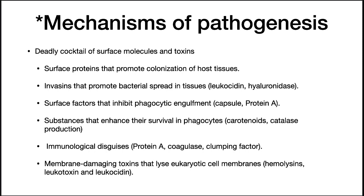Carotenoids and catalase will short-circuit killing mechanisms in phagocytes. Protein A, coagulase, and clumping factor provide immunological disguises that hide the bacterium from the immune system. Finally, membrane-damaging toxins such as hemolysins, leukotoxin, and leukocidin lyse eukaryotic cell membranes. These are toxic to white blood cells and will stop phagocytes from killing the bacterium.